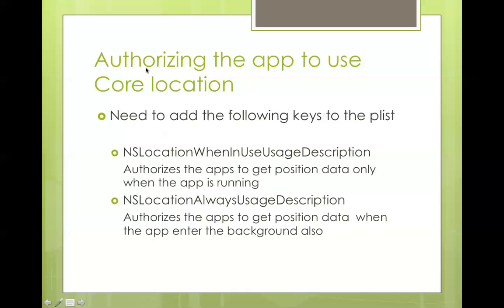After adding core location, you need to give authorization to your app to use location services. You add two key values: one is NSLocationWhenInUsageDescription — which only gets position while your app is running in the foreground — and the other is NSLocationAlwaysInUsageDescription, which gets position whether the app is in the foreground or background.